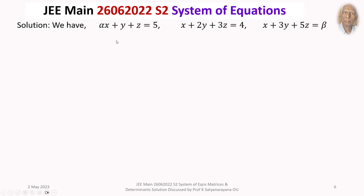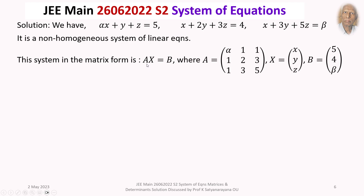We now discuss the solution in detail. This is a non-homogeneous system of linear equations, and its matrix equation is Ax = b, where capital A is the 3×3 coefficient matrix with first row (alpha, 1, 1), second row (1, 2, 3), and third row (1, 3, 5). Capital X is the column vector of variables x, y, z, and B is the column vector consisting of the values 5, 4, beta.